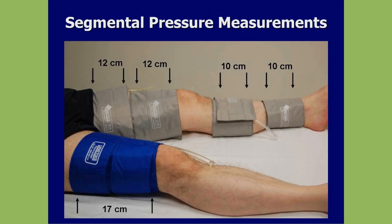Regarding cuff placement, 10 cm cuffs are used around the calf and 12 cm on the thigh. The four-cuff method versus the three-cuff method is illustrated here. On many thighs, there's simply not enough room to put two cuffs side by side without overlapping. The reason for the four-cuff method is that we can separate inflow disease from SFA disease by obtaining two different pressure measurements. If we can't do two cuffs, we can use a singular contoured cuff, which will fit better, but we lose that delineation between inflow and SFA disease.